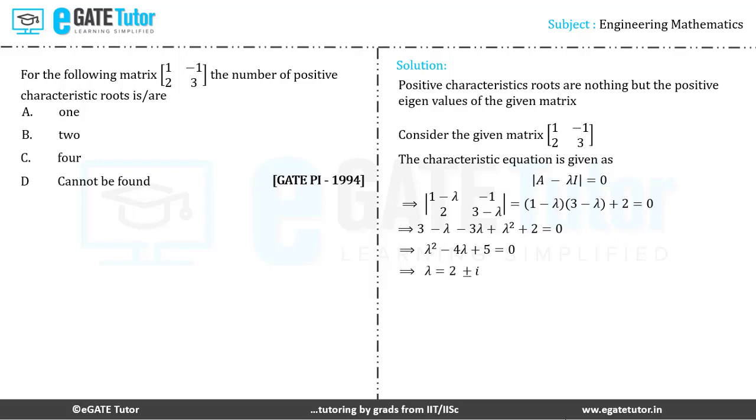The roots of this particular quadratic equation in lambda are complex, where λ = 2 ± i. Therefore, the eigenvalues of the given matrix are complex or imaginary and the matrix has no positive characteristic root.